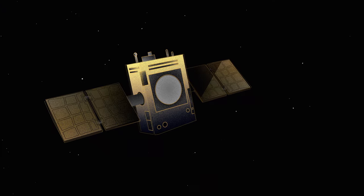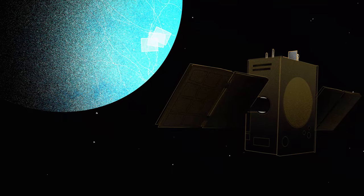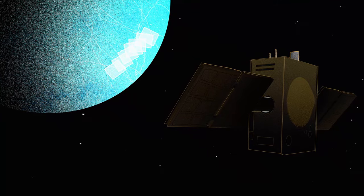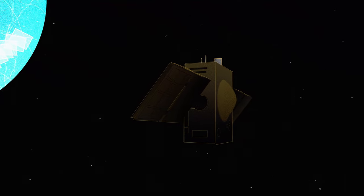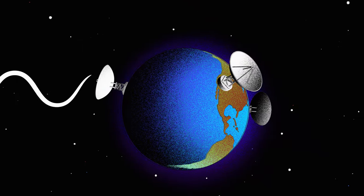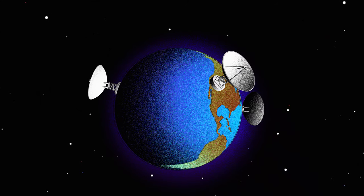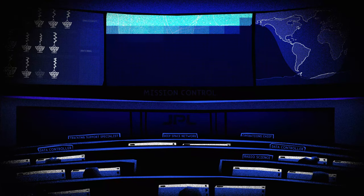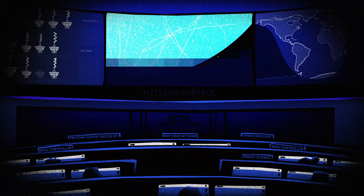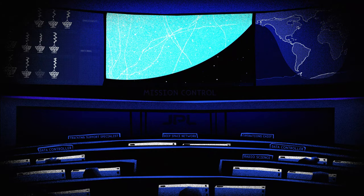Once spacecraft receive the signal, they execute commands, collect scientific data and never-before-seen images, and send all of that data back to Earth as digital bits, which are gathered by the huge antennas of the Deep Space Network and distributed to scientists, allowing them to learn a little bit more about how our solar system works.